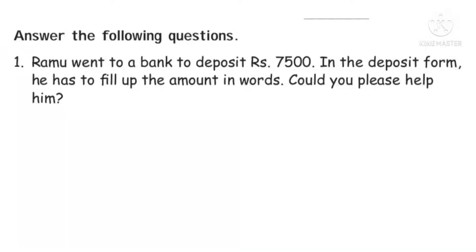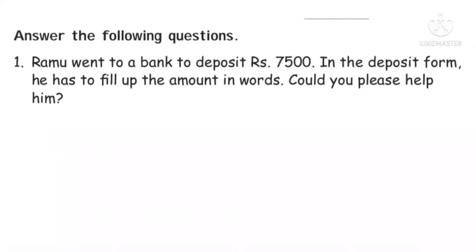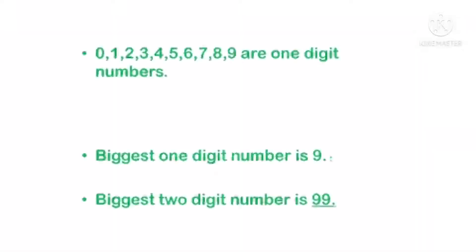The amount is seven thousand five hundred. We know the spelling of seven, and thousand, and five hundred. Write it now: seven thousand five hundred. Before we go to the second question, let us review the biggest one-digit number, two-digit number, three-digit number, and so on.